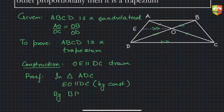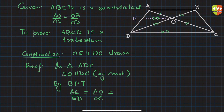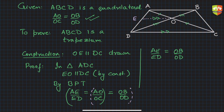By BPT (Basic Proportionality Theorem), we get AE/ED = AO/OC. And AO/OC = OB/OD, which is given. So we conclude that AE/ED = OB/OD.